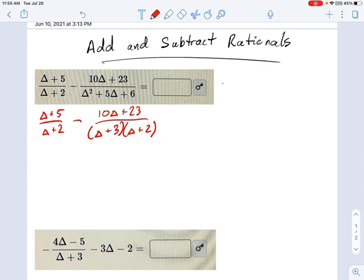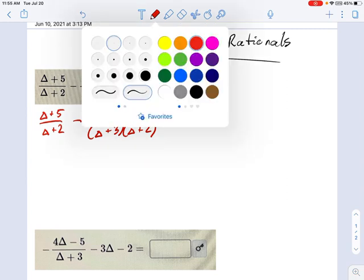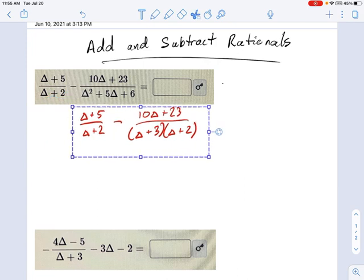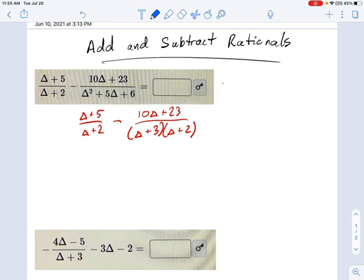And you can see now what it's missing. This side over here wants another factor of delta plus 3. It already has delta plus 2, but if I could give it another delta plus 3, I'd be good. We'd have common denominators. And the way you do that is this concept of a crazy one that we've talked about in the past.